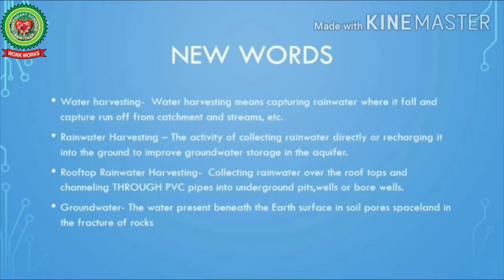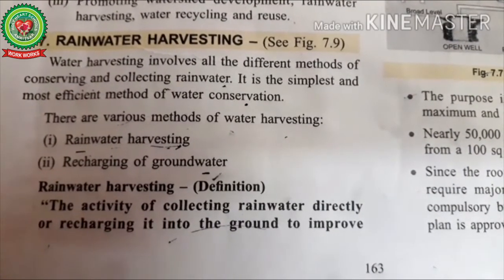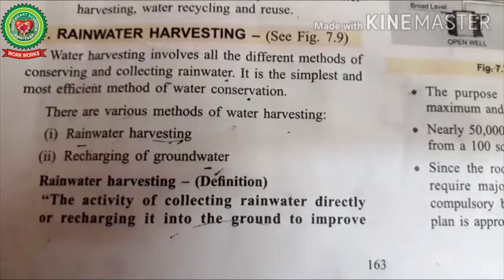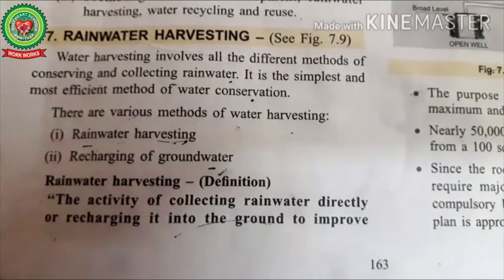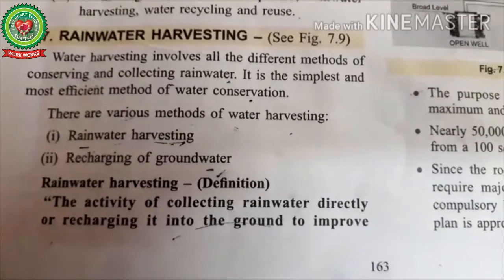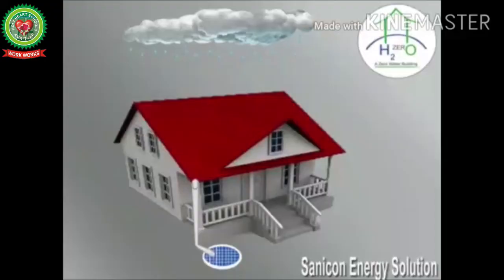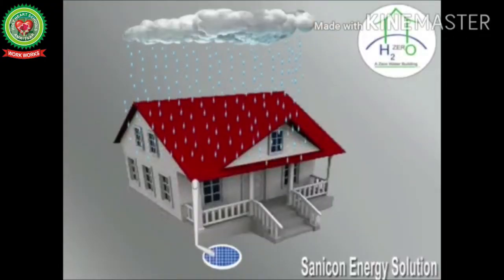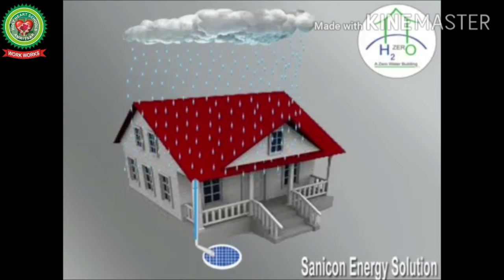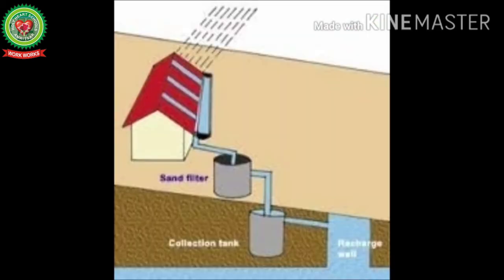Groundwater is the water present beneath the earth's surface in soil pores and in the fractures of rocks. Now let's start with our topic rainwater harvesting, given on page 163 of your book. Harvesting is the process of collecting a natural resource to use it effectively. Rainwater harvesting is a type of harvest in which raindrops are collected and stored for future use rather than allowing them to run off.